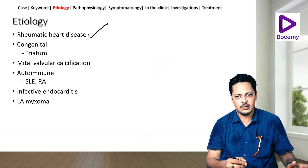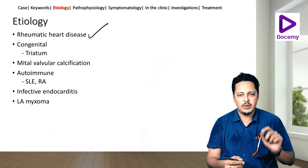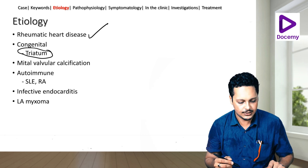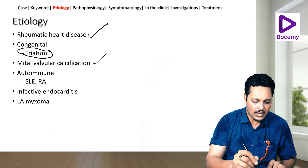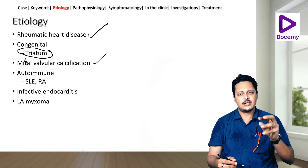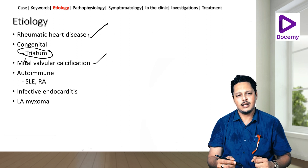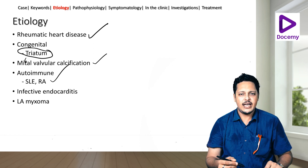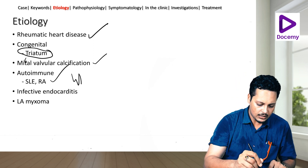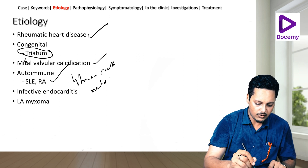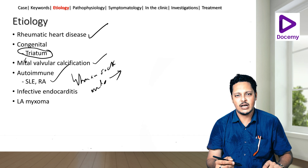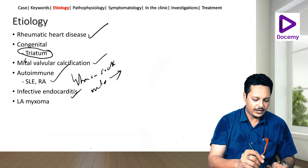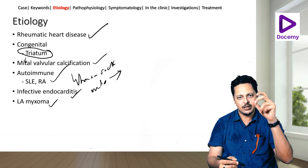Regarding etiology, always remember rheumatic heart disease in our country. Next, congenital — it can be a part of cor triatriatum. Mitral valvular calcification involves dystrophic calcification of the mitral leaflets wherein they are no longer pliable and can become stenosed. Autoimmune causes include SLE and RA — remember the term Libman-Sack endocarditis which leads to sclerosing of the mitral valve apparatus. Infective endocarditis is also a cause, not acutely but down the line. Finally, LA myxoma itself can obstruct flow from the LA to the LV.